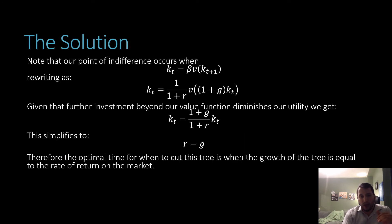The solution is that we need to know our point of indifference, which occurs where kt, the tree size at time t, is equal to the discounted value of the tree size at time t plus 1. Plugging in our values, that is 1 over 1 plus r for beta, and for our value of kt plus 1, that's equal to 1 plus g times kt.